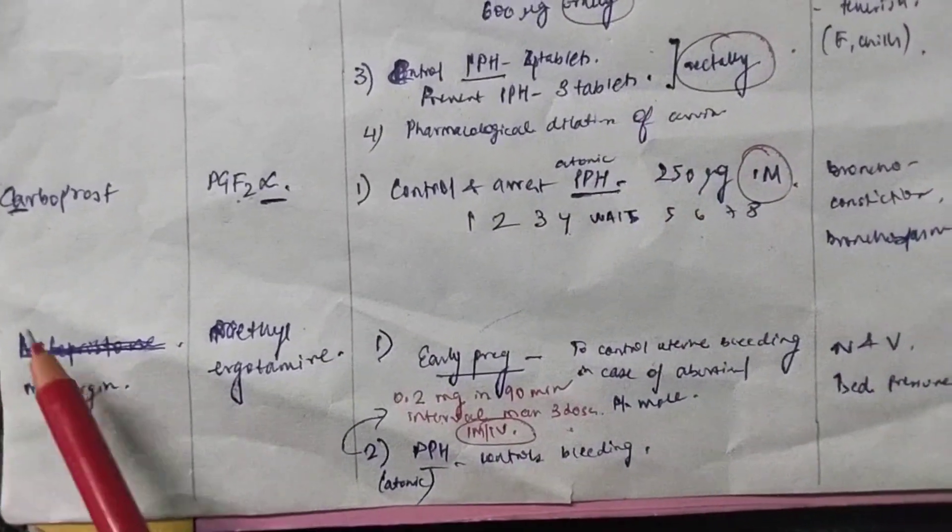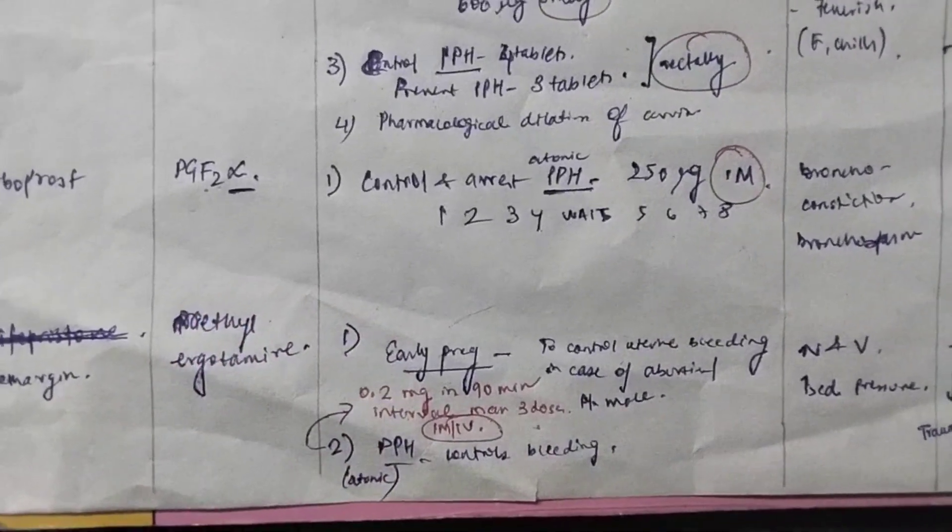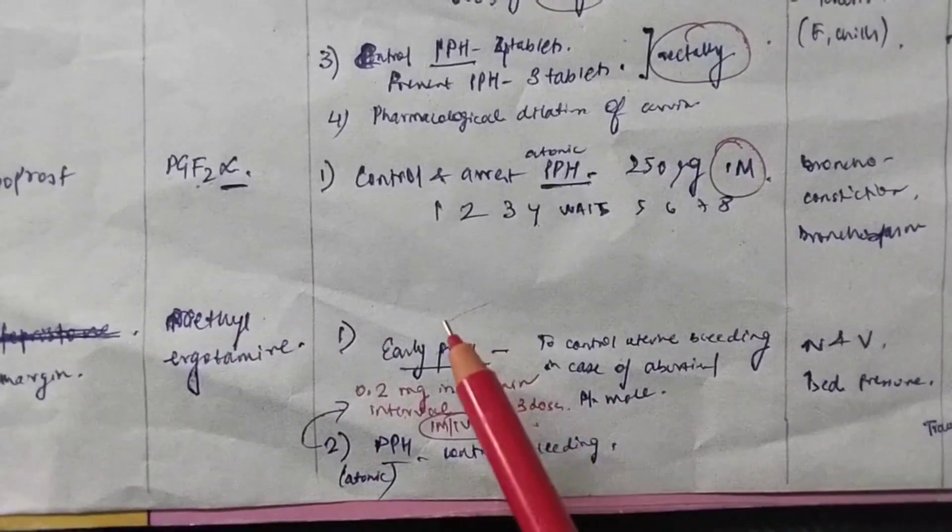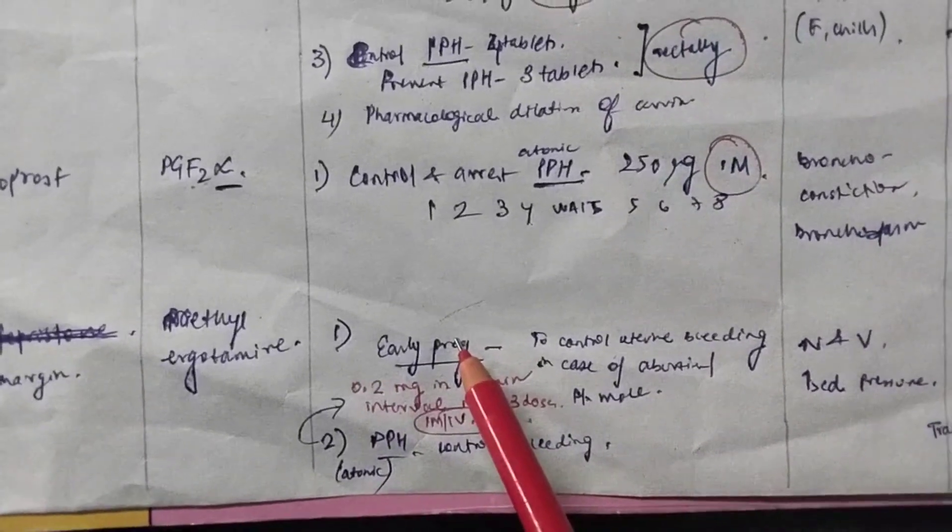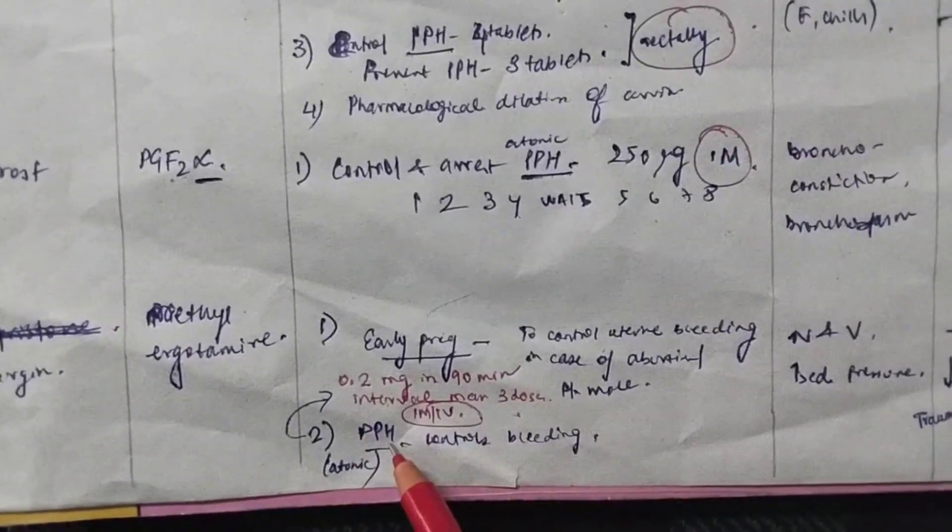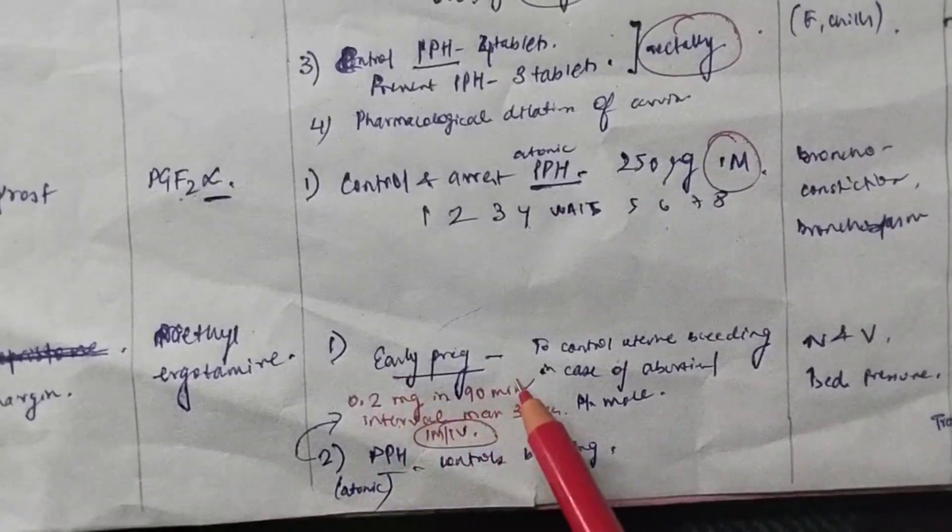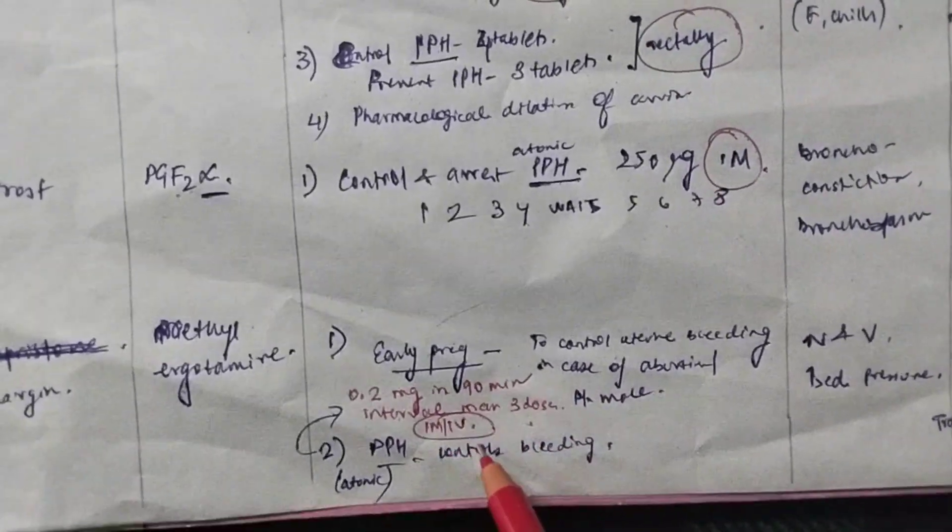Lastly, you come to methergin. Methergin is methyl ergometrin. This is also used in two cases. Early pregnancy in case of abortions and hydatidiform mole. And in case of PPH, to control bleeding. What is the dose in PPH? You have to give 0.2 milligram at 90 minutes interval. And maximum, you can give three doses.